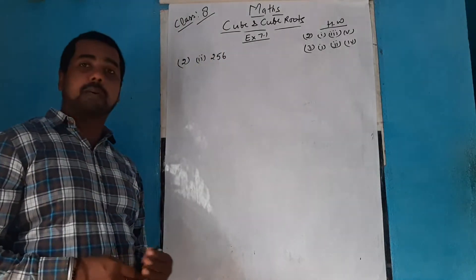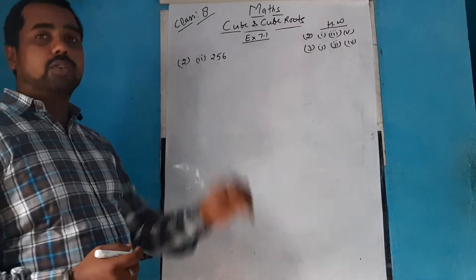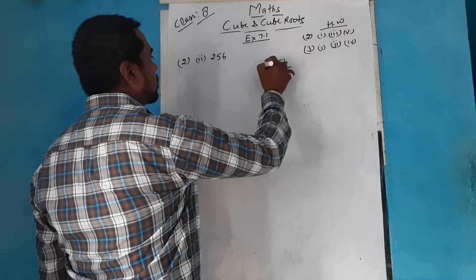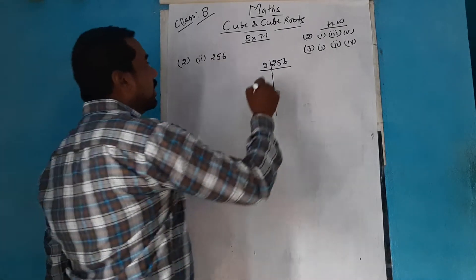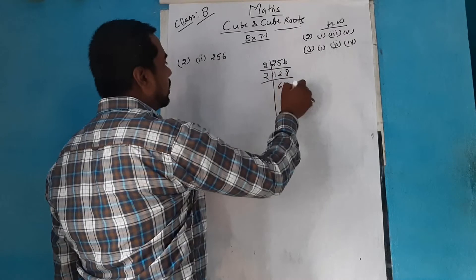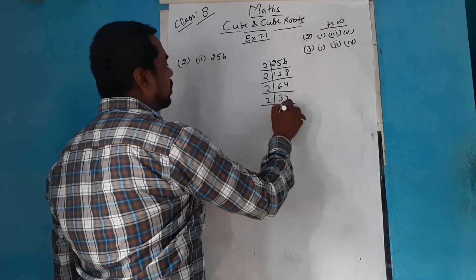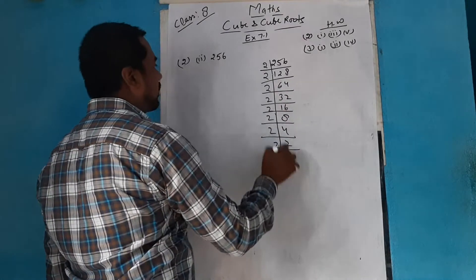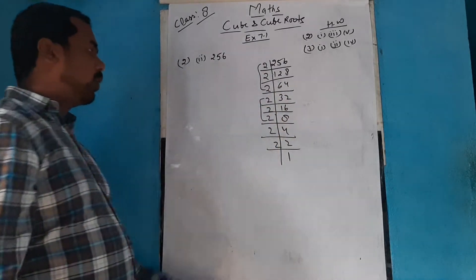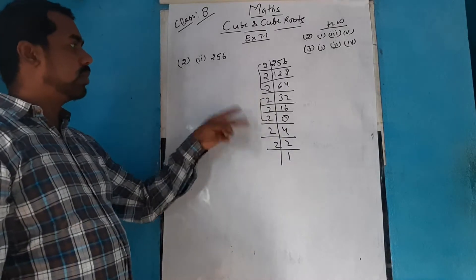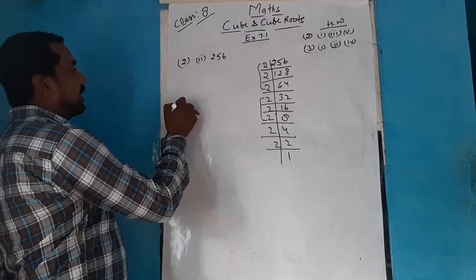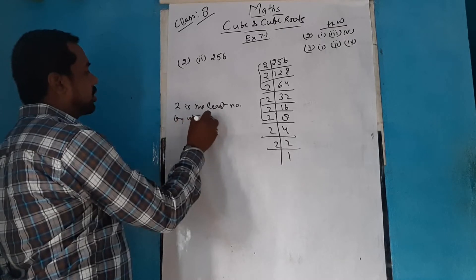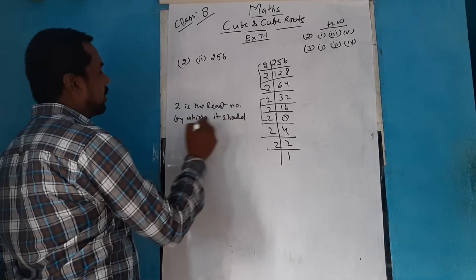For example, for question 2 part 2, the number is 256. We need to find the least number to be multiplied. Applying prime factorization: 256 = 2 × 2 × 2 × 2 × 2 × 2 × 2 × 2. When we form pairs of 3, we see that one pair of 2 is missing after making two complete pairs of 3. So 2 is the least number by which 256 should be multiplied.